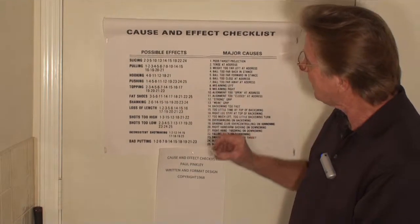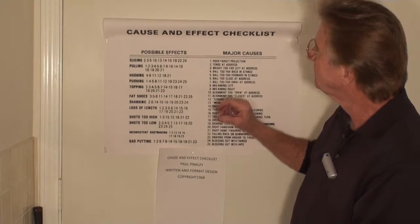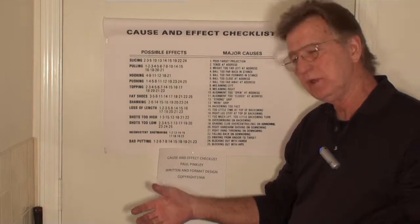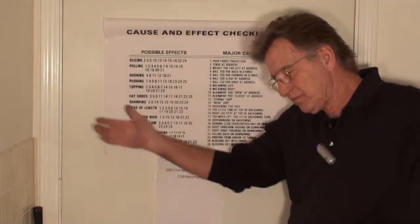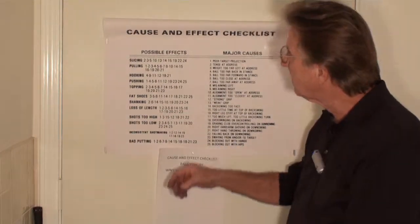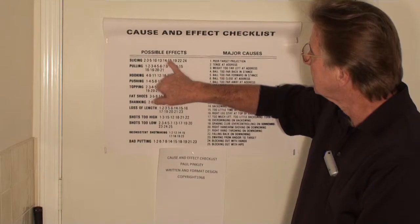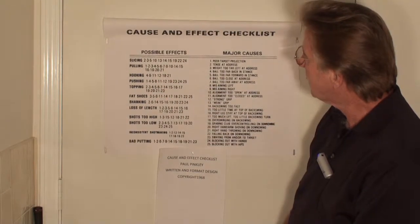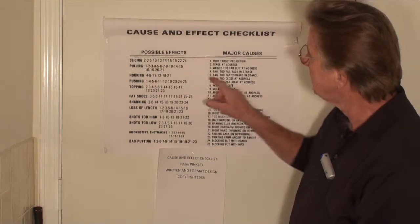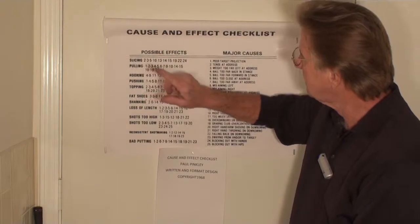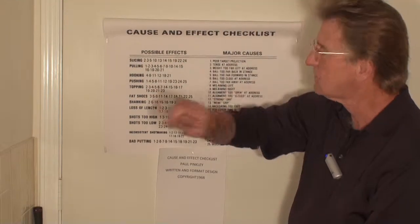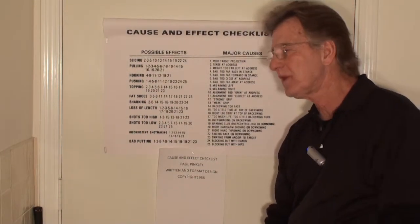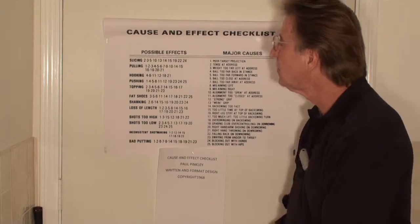And I'm thinking, well, if I took a little time — maybe a week, two weeks, a month — I could systematically sort through these possible causes, and eventually it would lead me to determine why I was slicing the ball, which is typically the number one problem with average golfers.